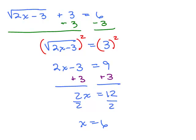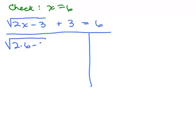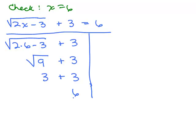Now we have to make sure this checks. Let's check x equals 6 into the original equation. We plug in 6 for x and simplify the left-hand side. Inside the square root: 2 times 6 is 12, minus 3 is 9. So we get square root of 9 plus 3. The square root of 9 is 3, so we have 3 plus 3, which equals 6. We have 6 on the other side, so it checks. The correct solution is x equals 6.